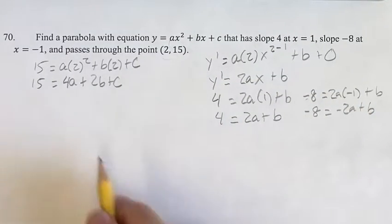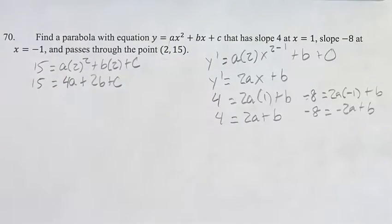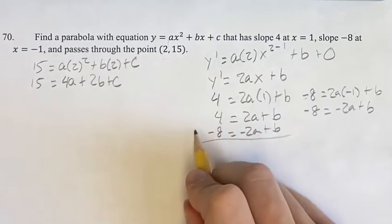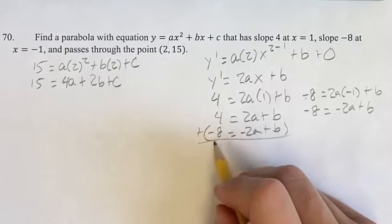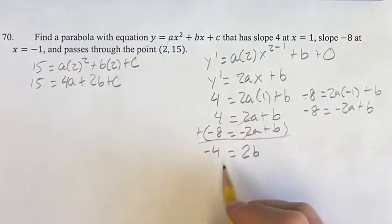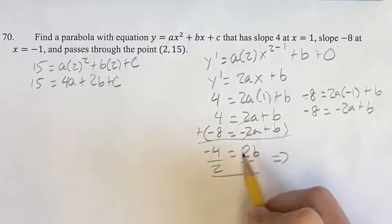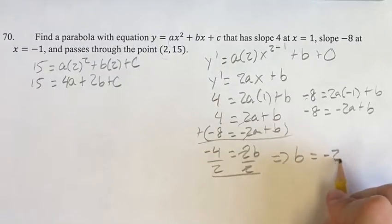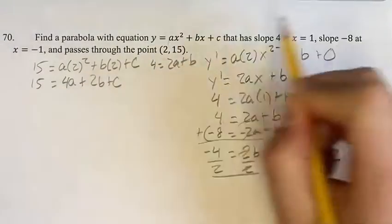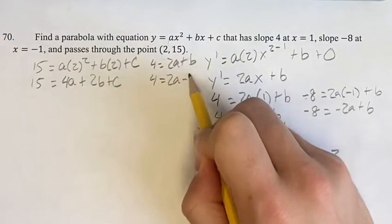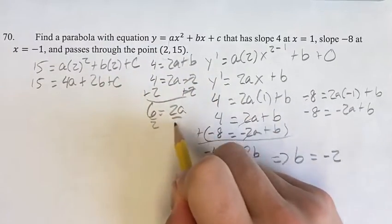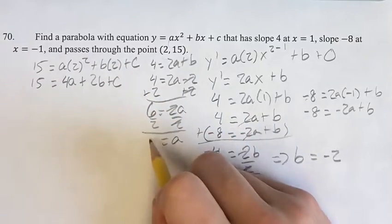Now we have three equations with three variables and we can solve for them. Writing the two slope equations underneath each other and adding them, we get 4 plus negative 8 is negative 4, the 2a terms cancel, and b plus b is 2b. Dividing both sides by 2, we get b equals negative 2. Since 4 equals 2a plus b, we plug in negative 2 for b and solve: 2a equals 6, so a equals 3.